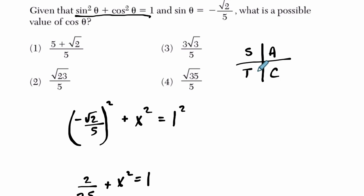If sine is negative, we're either in the third quadrant or the fourth quadrant. But we don't have enough information to figure out which one it is. In the fourth quadrant, cosine would be positive. But in the third quadrant, cosine would be negative. So really, it could be plus or minus square root of 23 over 5.